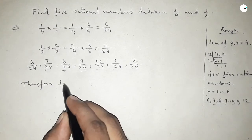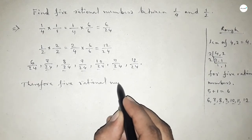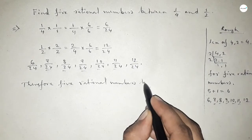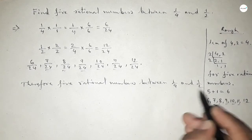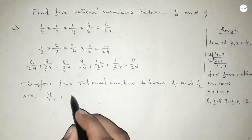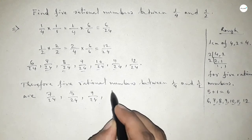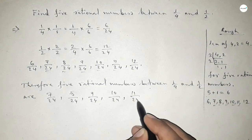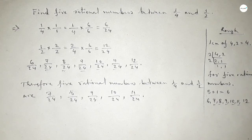Therefore, the 5 rational numbers between 1 over 4 and 1 over 2 are: 7 over 24, 8 over 24, 9 over 24, 10 over 24, and 11 over 24. This is the process to find out 5 rational numbers between 1 over 4 and 1 over 2. Thanks for watching.